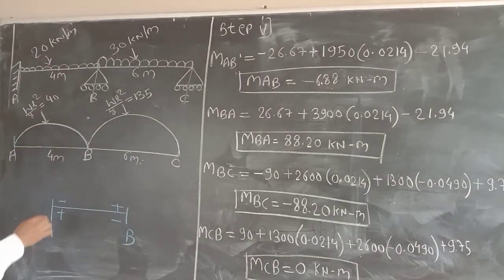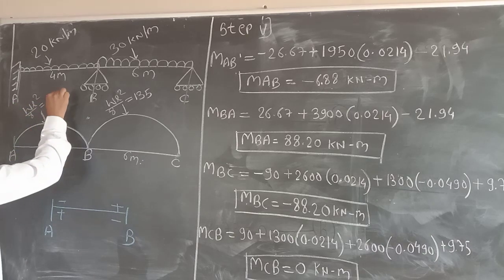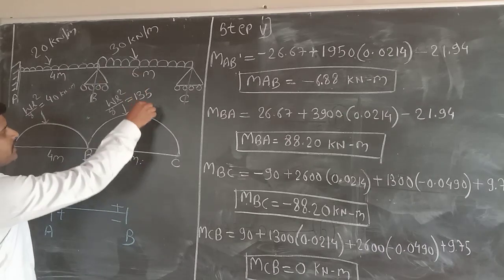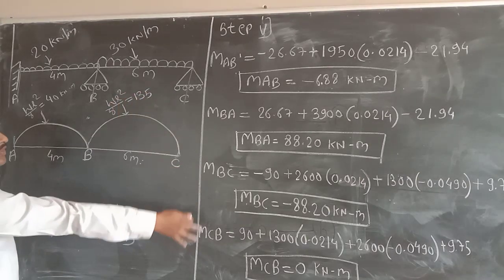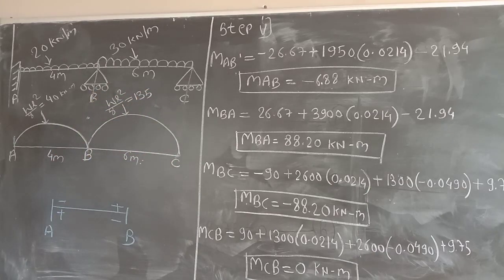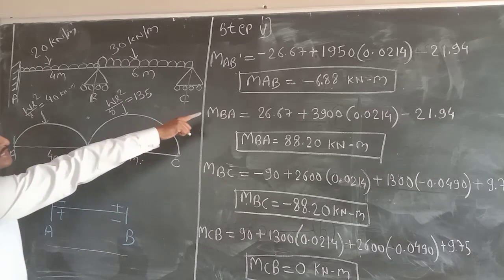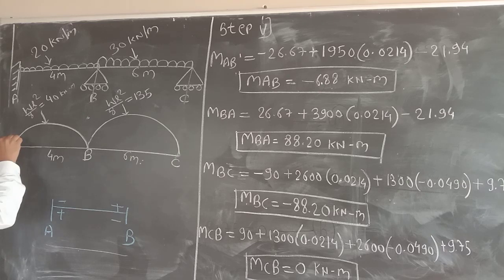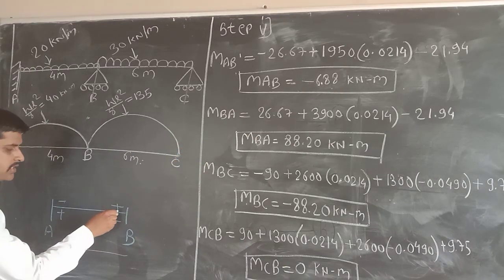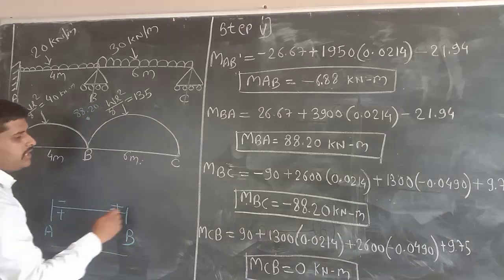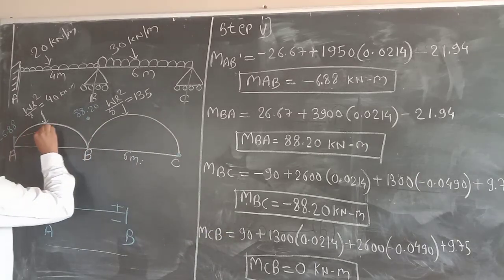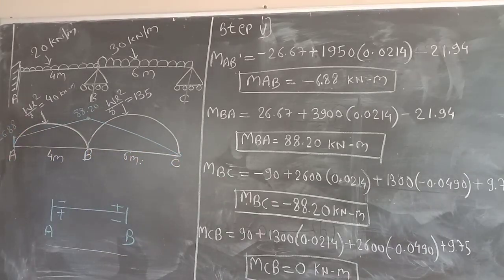Our last step is to draw the superimposed bending moment diagram (BMD). For span AB with UDL, the free BMD ordinate is WL²/8 = 40 kNm. For span BC with UDL, it is WL²/8 = 135 kNm. We draw minus 6.88 kNm above the line at A, plus 88 kNm at B, and 0 at C. Joining these points gives our final superimposed BMD.